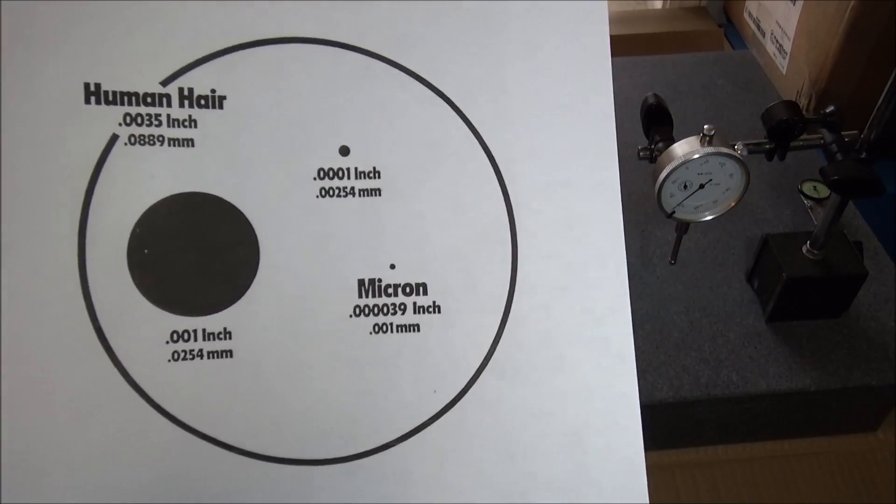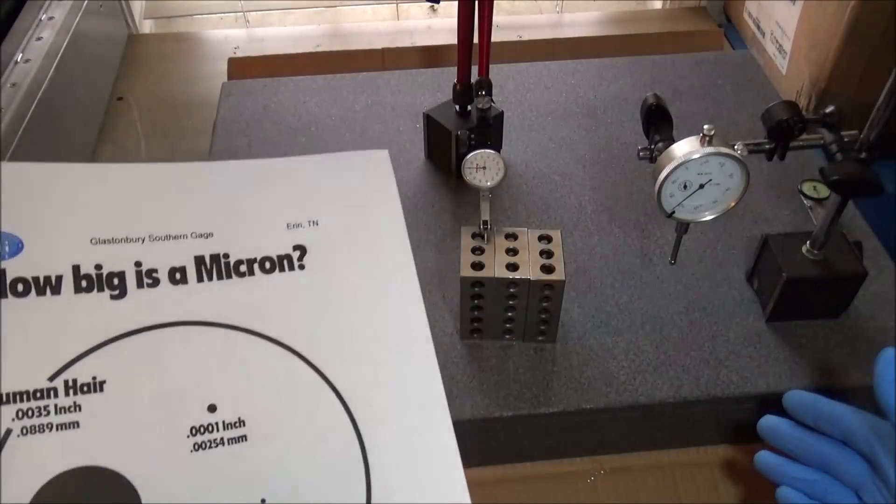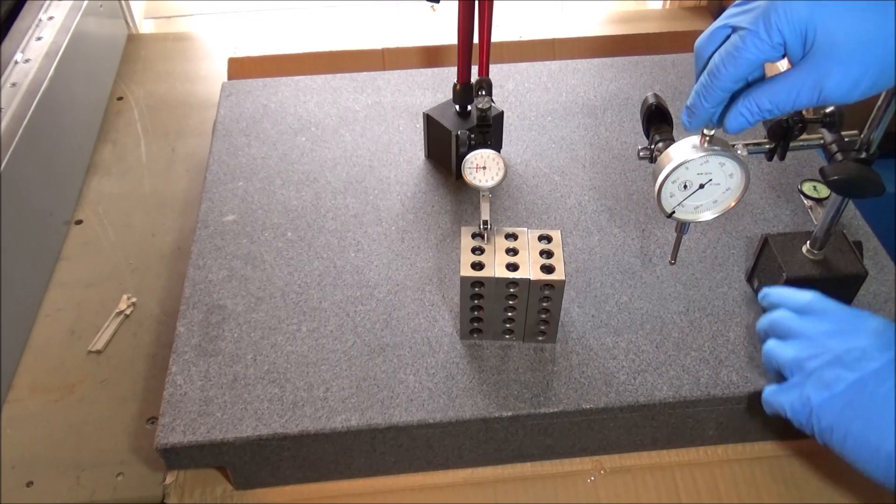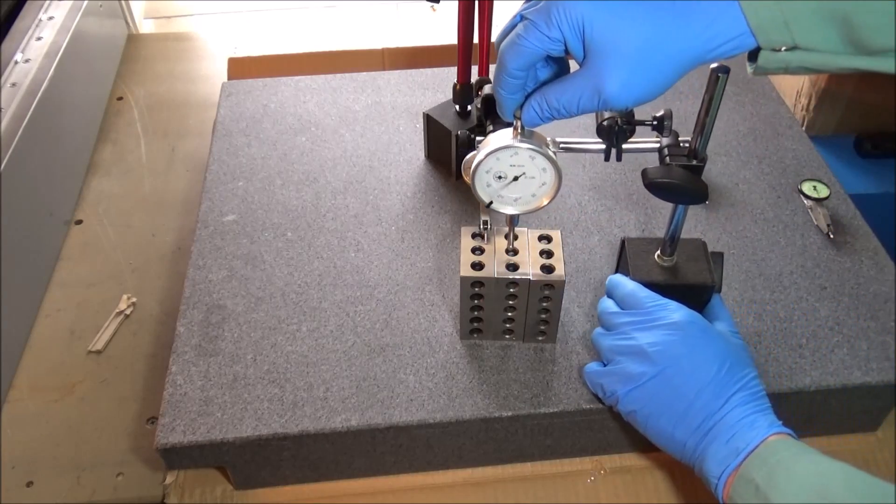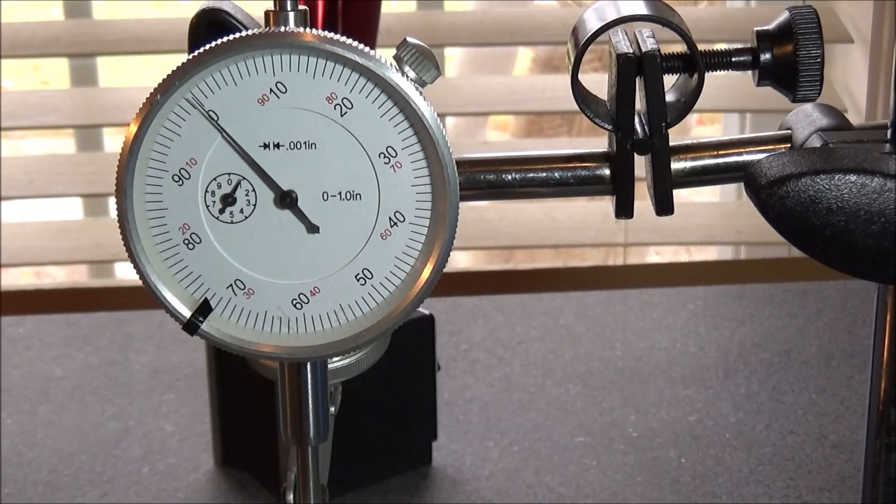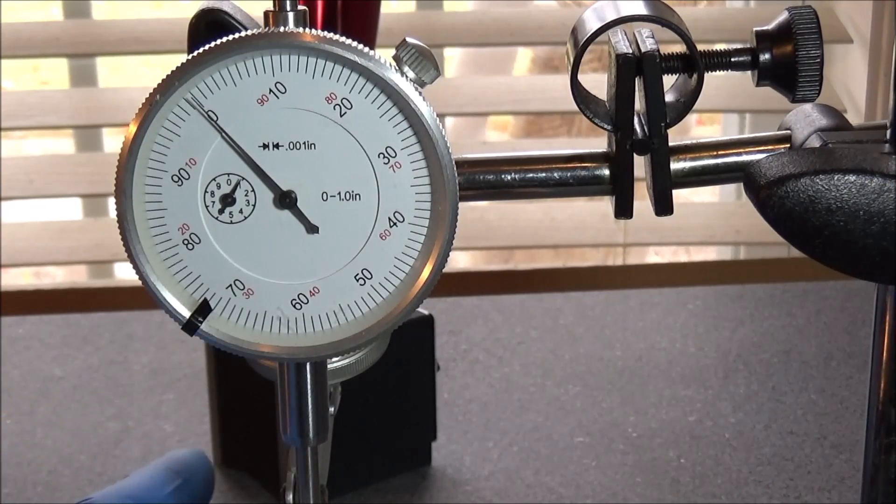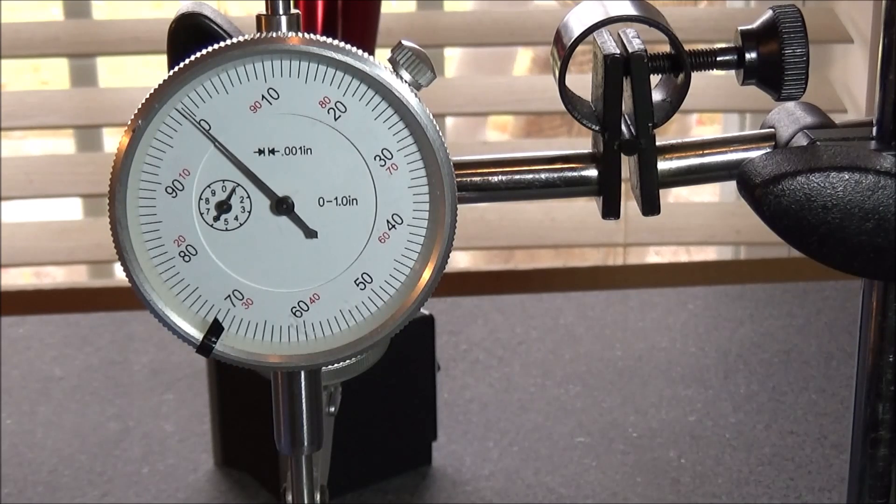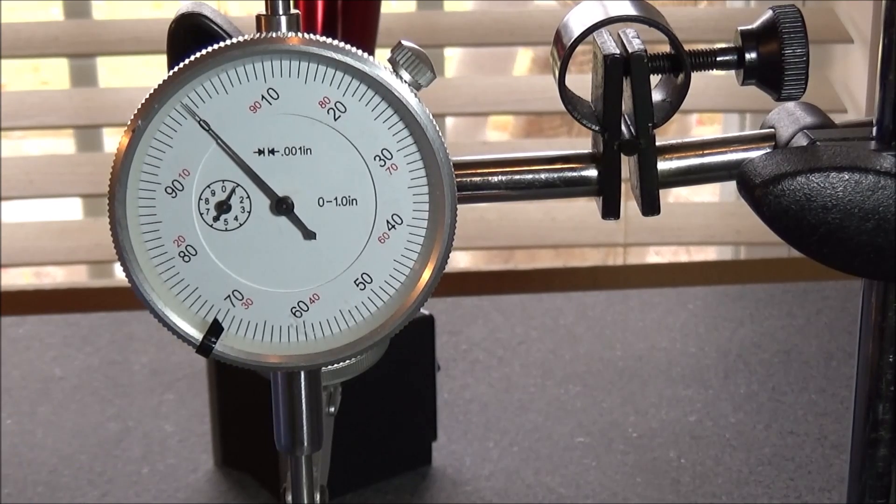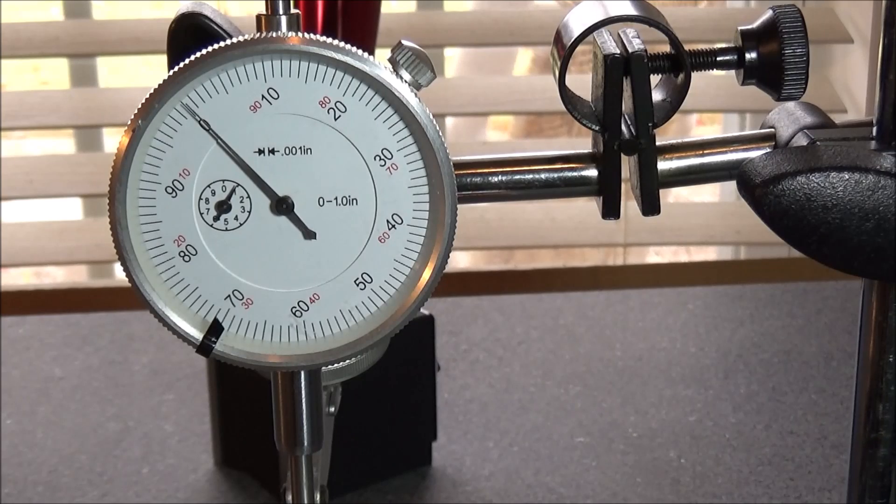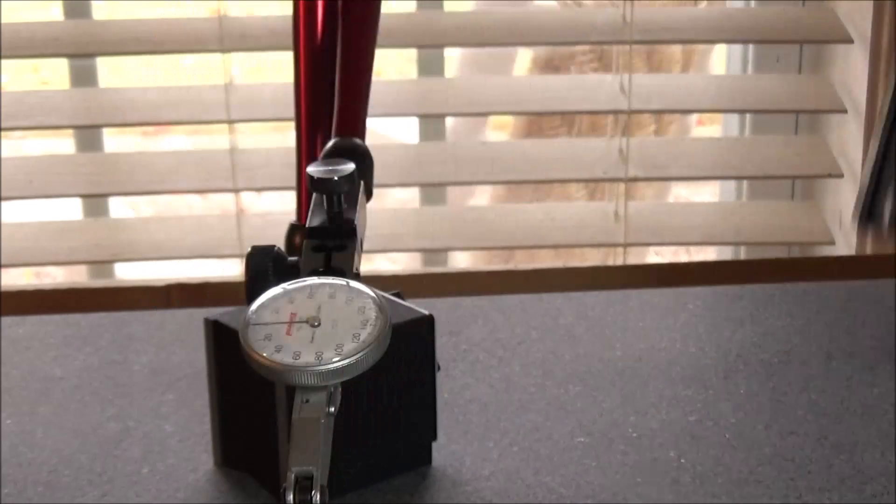You can see how fine a resolution we're getting with these indicators. How does that translate when you're working with your machinery? With this indicator here I can measure a thousandth of an inch. You can see that this block is on zero, zero, zero, and zero. If this is all you have to work with and this is the finest resolution you're measuring, a thousandth of an inch, then all seems well with these one-two-three blocks.